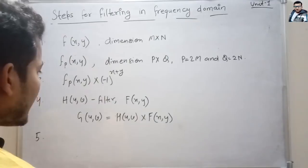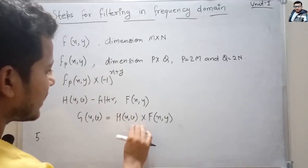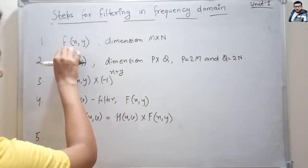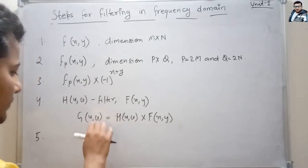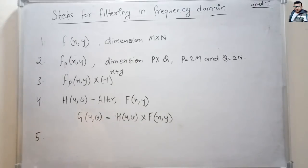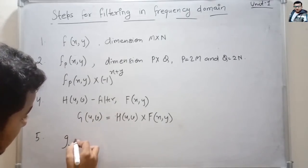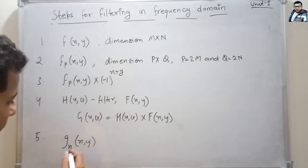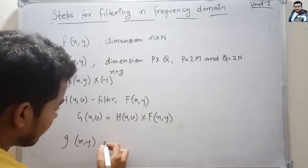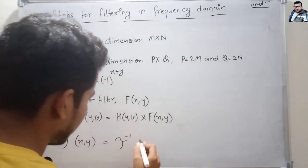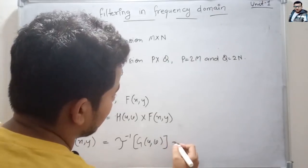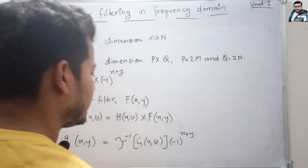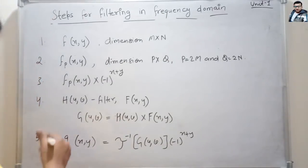After performing filtering, we need the image back in spatial form, so we take the inverse discrete Fourier transform. The processed image g(x, y) will be equal to the inverse Fourier transform of G(u, v). Then we again centralize this image by multiplying with (-1)^(x+y).